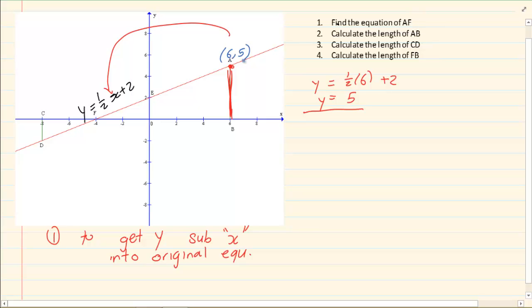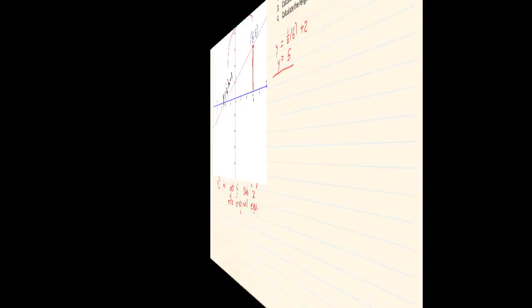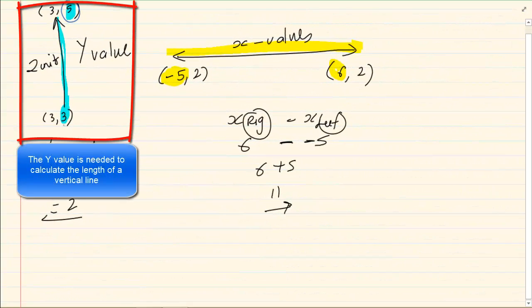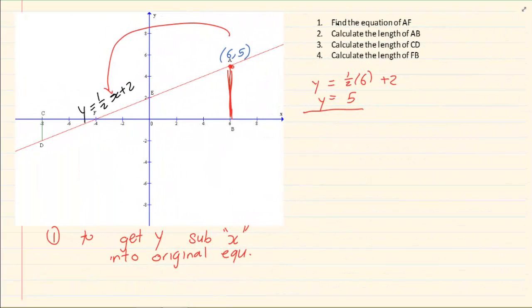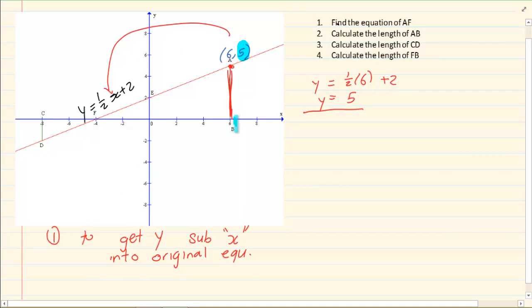Now why would I be so interested in the coordinates? When we want to calculate a length the values that I am interested in is the y values. So I need the y values. So here I have the y values, it's 5 and at this specific point it's 0. So the length of AB is going to be top minus bottom which is going to equal to 5 minus 0. So it's 5 units.